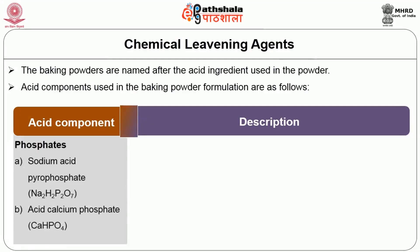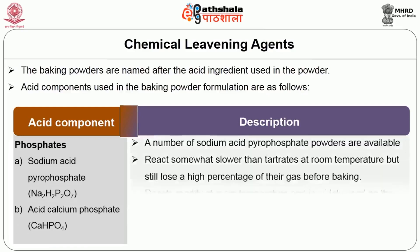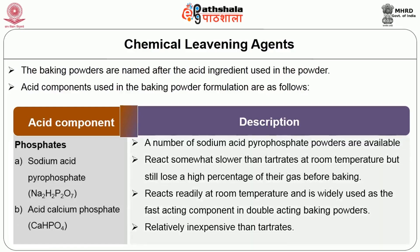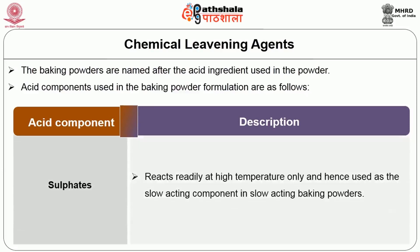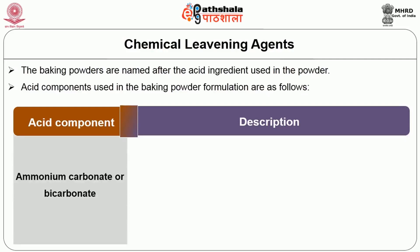Phosphates are of two types: sodium acid pyrophosphate and acid calcium phosphate. Sodium acid pyrophosphate powders react somewhat slower than tartarates at room temperature but still lose a high percentage of their gas before baking. Acid calcium phosphate reacts readily at room temperature and is widely used as the fast acting component in double acting baking powders. These phosphates are relatively inexpensive compared to tartarates. Sulfates react readily at high temperature only and hence are used as the slow acting component in slow acting baking powders.